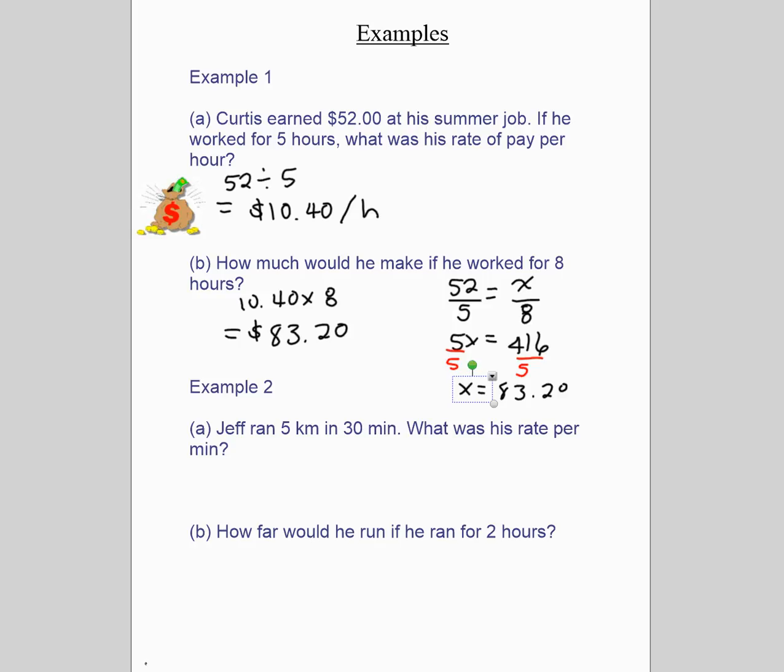Jeff runs five kilometers in 30 minutes. It says what was his rate per minute. Be careful, you don't necessarily divide by the smaller number. You have to look at what it's asking. Because it's asking for the rate per minute, that means minutes comes second. So we're going to do five kilometers divided by 30 minutes. You're going to get 0.166666 repeating. We can write the repeating with a bar over it. So it's 0.16 repeating kilometers per minute.